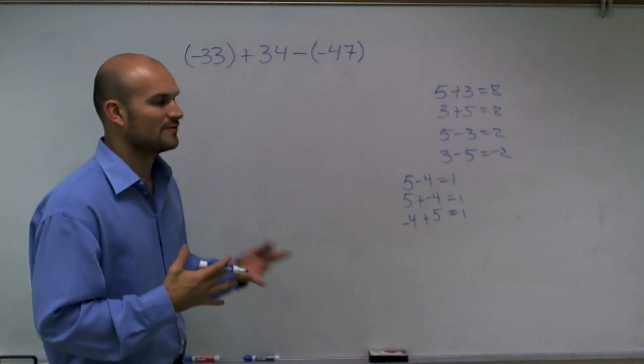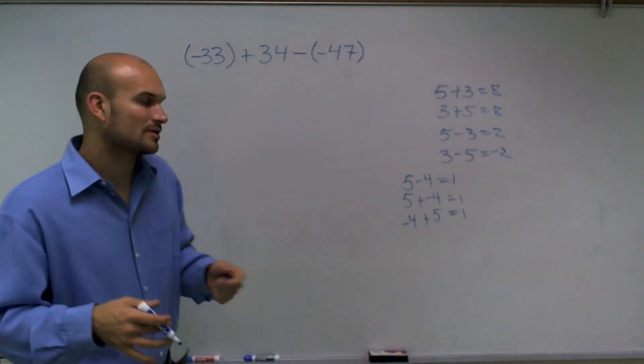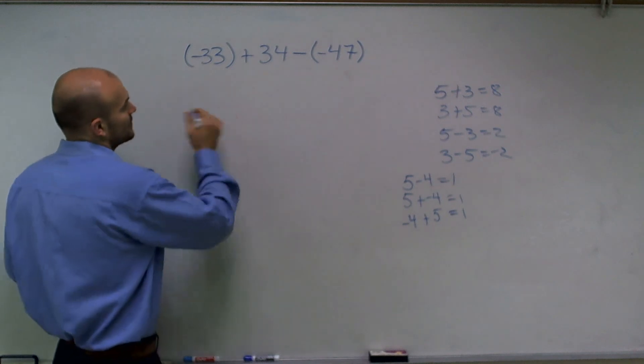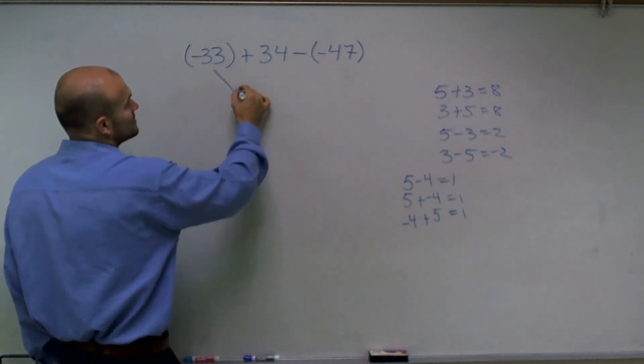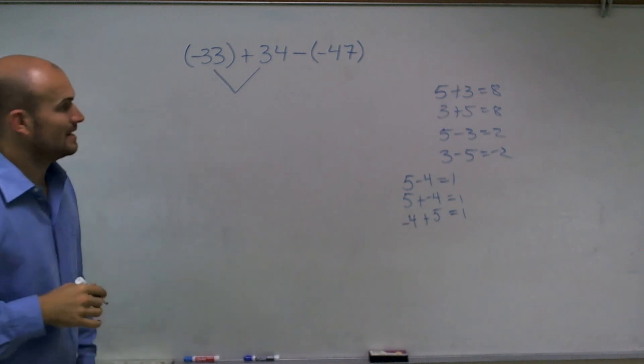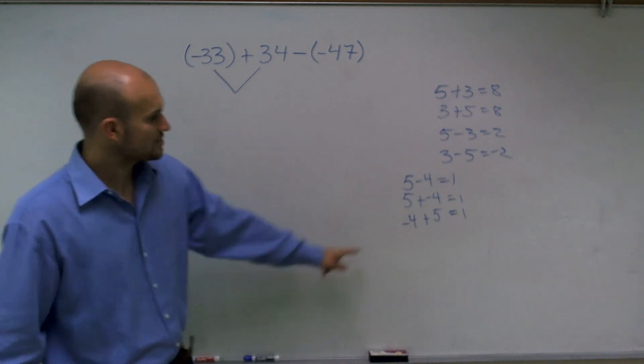So it's just really important for you to understand you can work like that. So the first thing I'm going to do is I'm going to take a negative 33 and add it to a 34. So it's kind of like this.